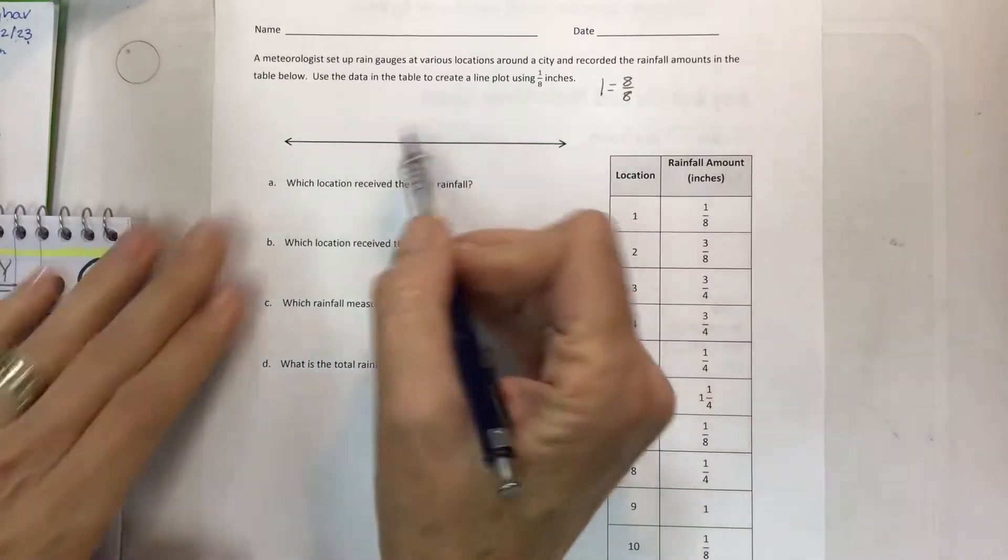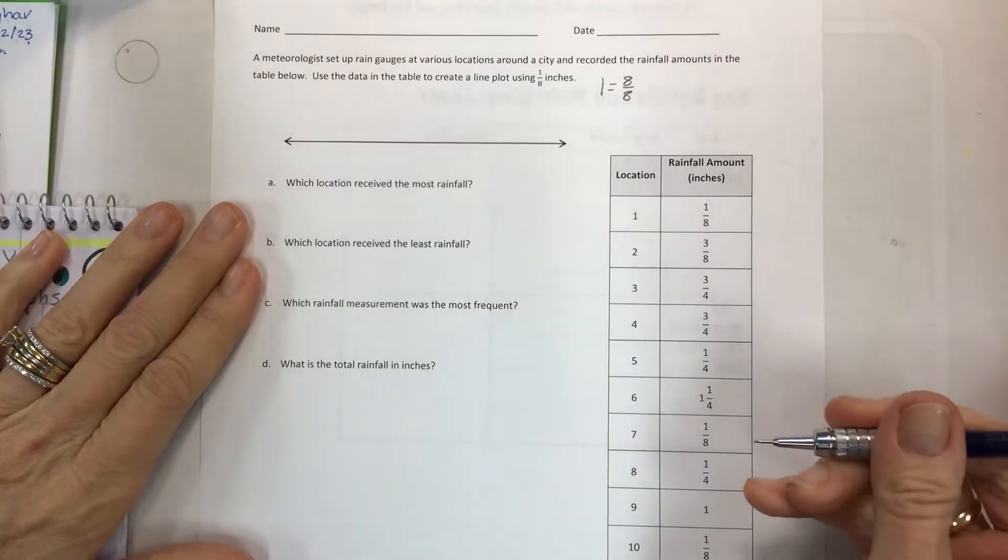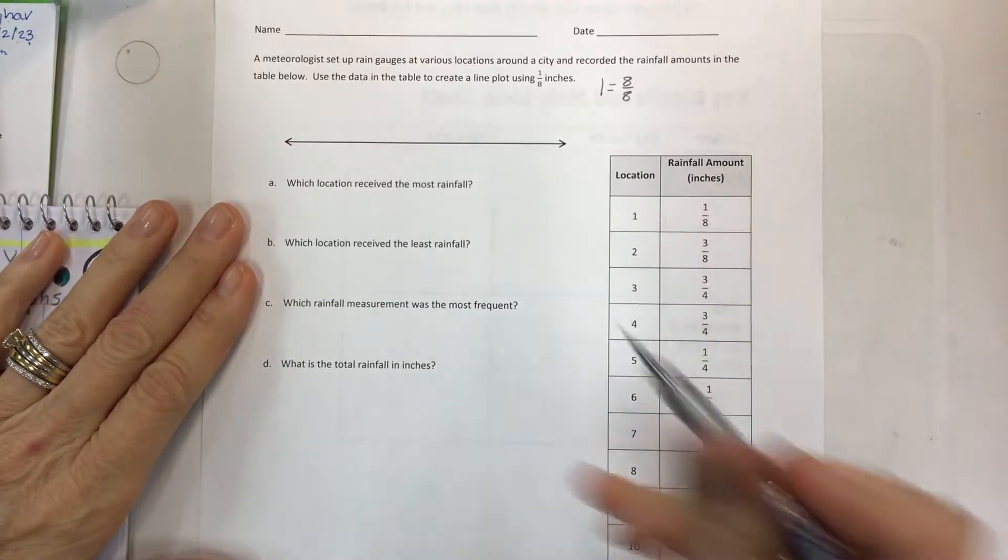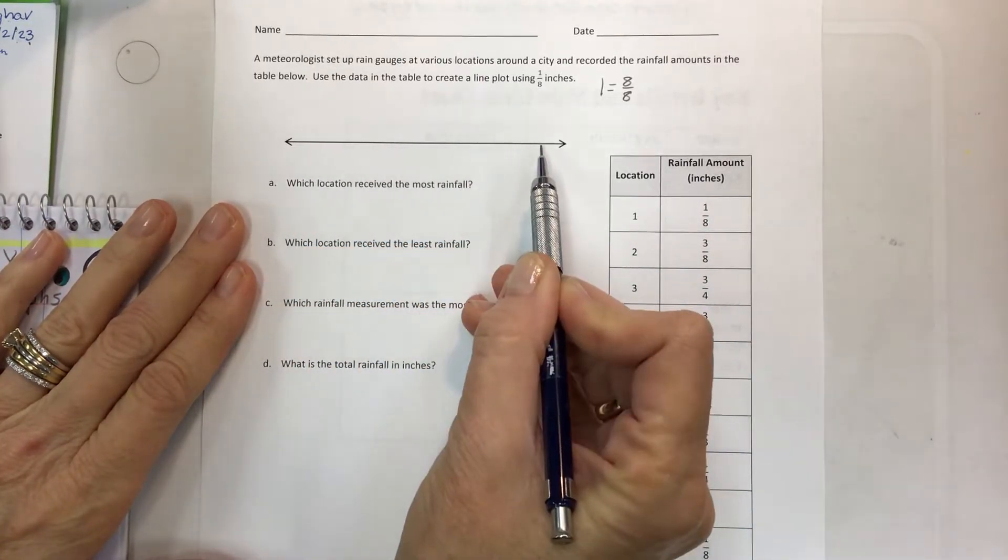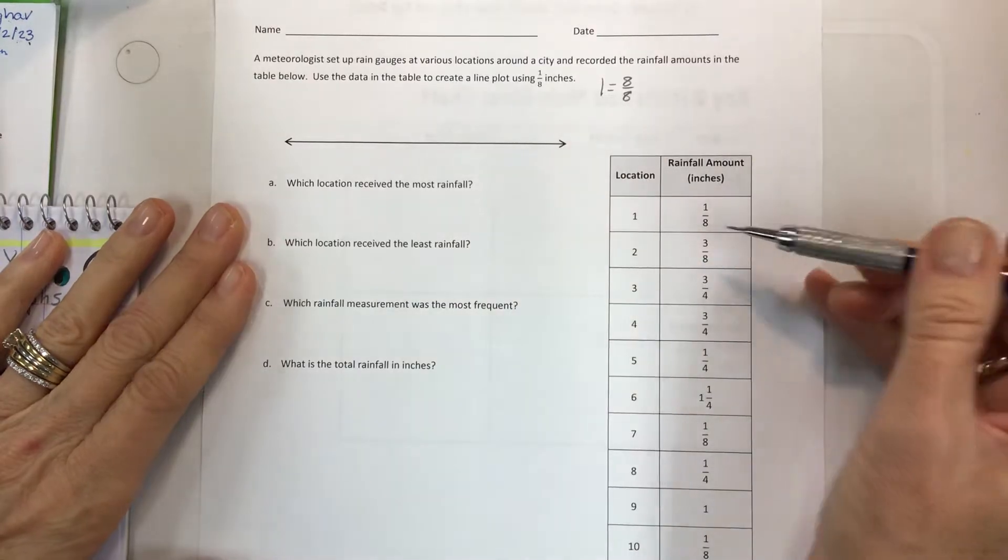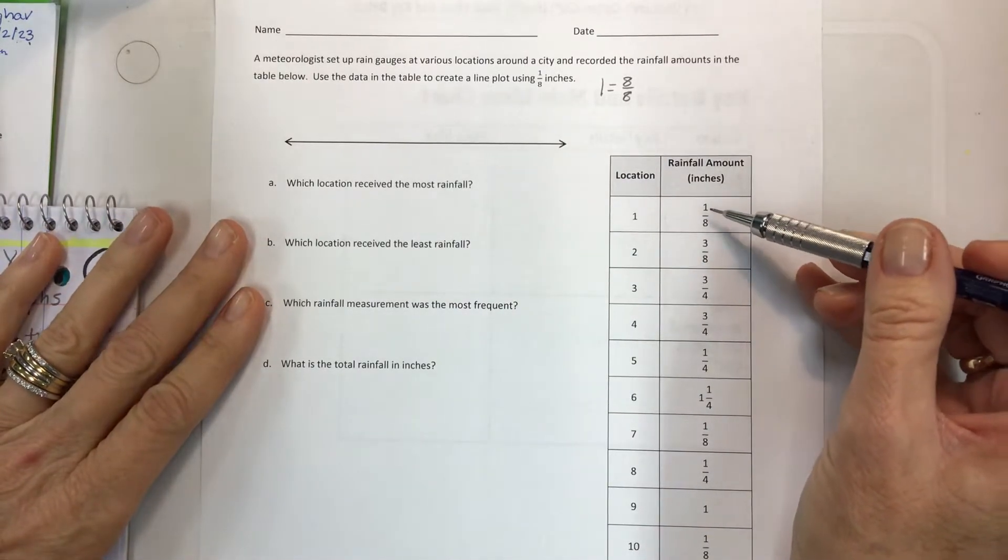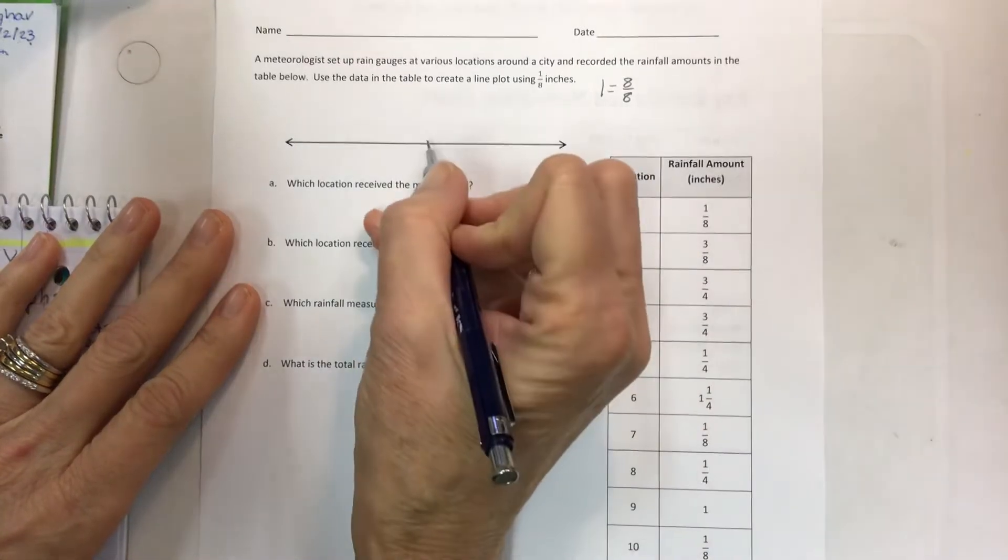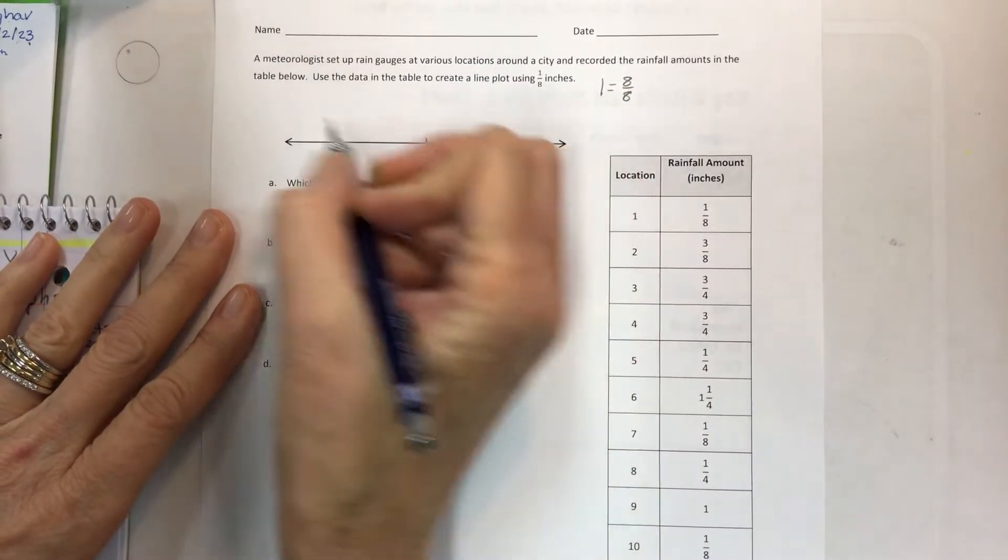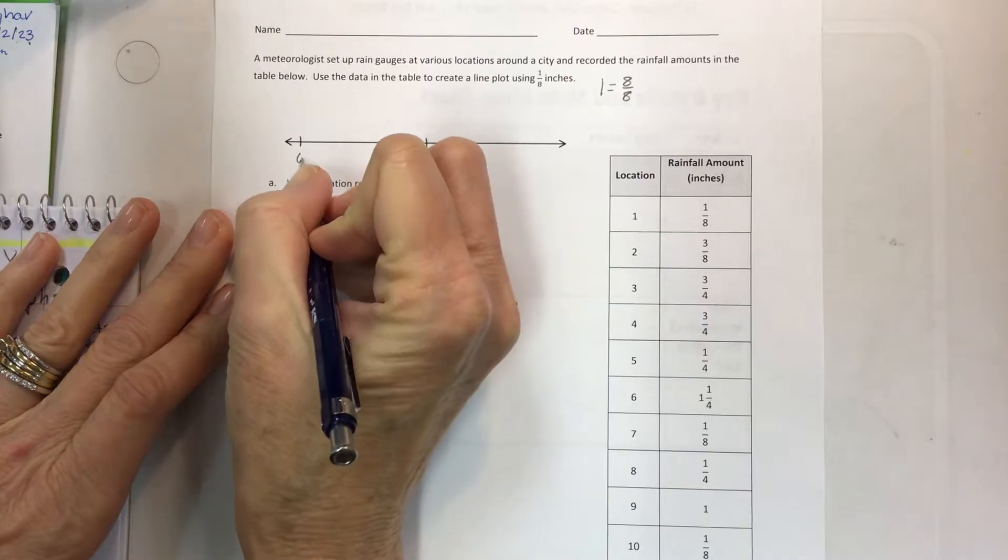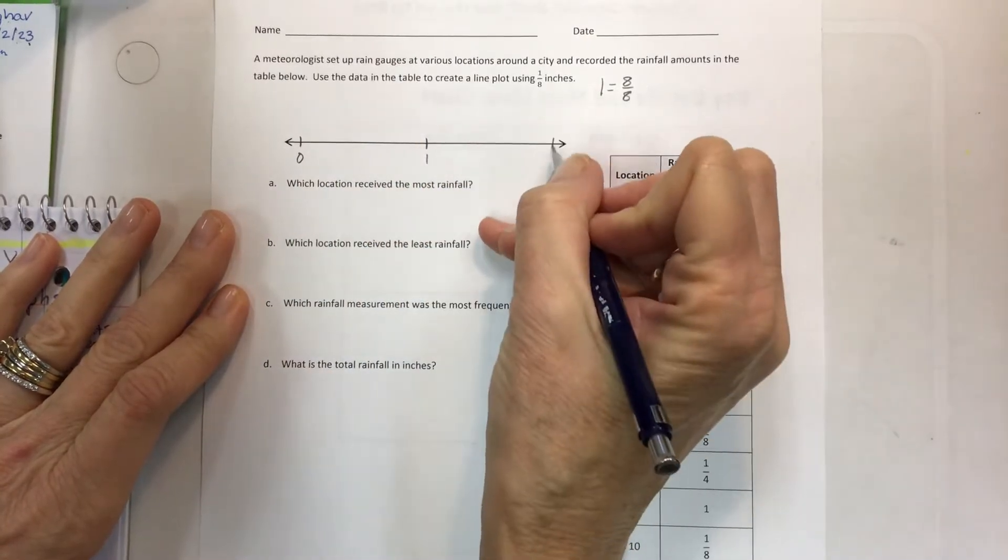Back to the line plot. If I examine the data and I have to put the data on here in eighths, I have to know what my minimum value is and my maximum value. So I can see that I have 1 eighth, and I'm going to divide this right in the middle. This is going to be my zero, and this will be one, and this is going to be two.